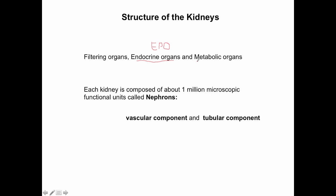The kidneys are also metabolic organs. One metabolic function is gluconeogenesis — the production of new glucose from substrates such as lactic acid and amino acids. We've talked about gluconeogenesis as something the liver does, but the kidneys contribute as well. The kidneys also regulate levels of electrolytes, plasma volume, and plasma osmolarity through their filtering and urine production function.